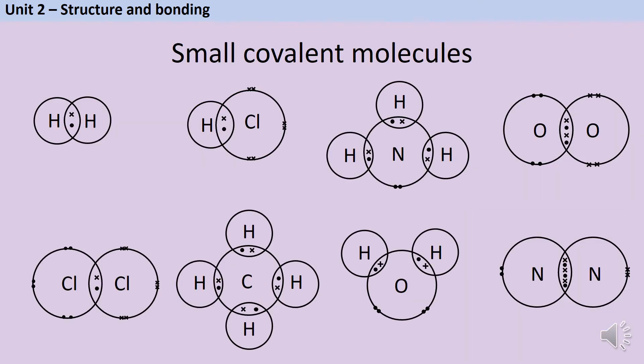In the previous video where we introduced dot and cross diagrams for covalent molecules we met the eight named examples from the AQA GCSE specification and you do need to be able to draw all of these but in this video we're interested in what these molecules have in common with each other. How are their physical properties similar?